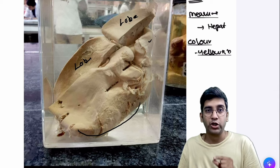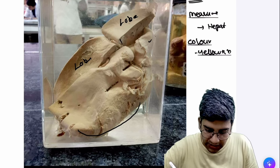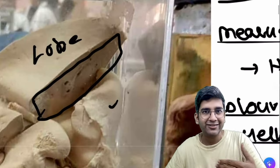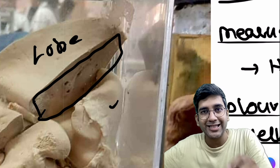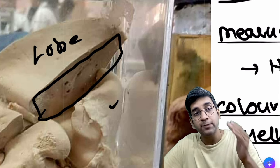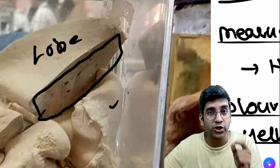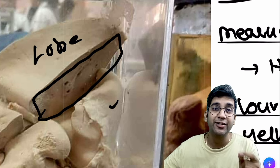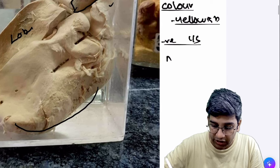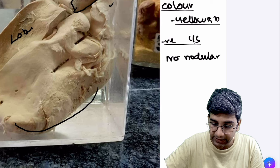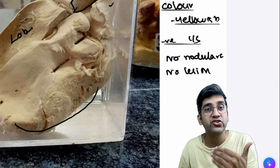Now, what most students miss is looking at the cut surface. By default, since you know it's a fatty liver with yellowish color, you might stop there — but commenting on the cut surface is very important. Whatever visible cut surface is present here, it does not show any bands of fibrosis, no nodularity, and no discrete lesions. These negative findings are critical: no nodularity and no lesions on the cut surface tell me this has not progressed to cirrhosis.